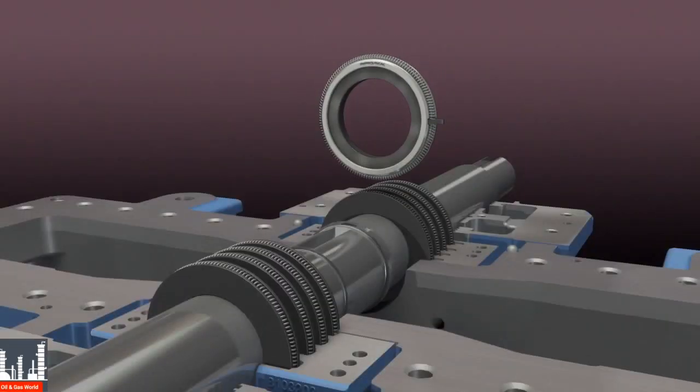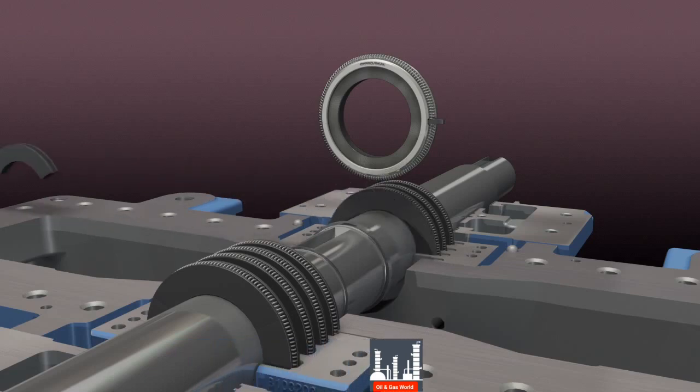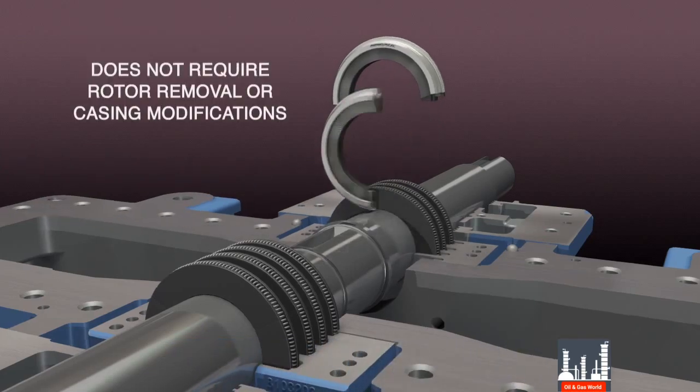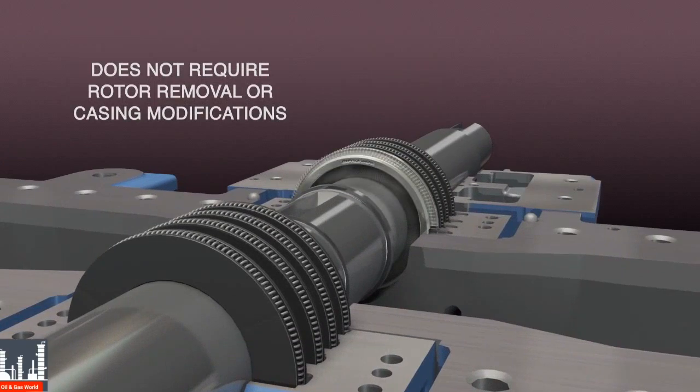Designed as a drop-in replacement for carbon rings, the Sentinel floating brush seal utilizes a split design that does not require rotor removal or costly casing modifications.